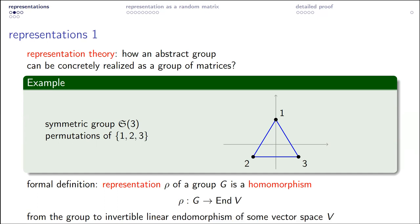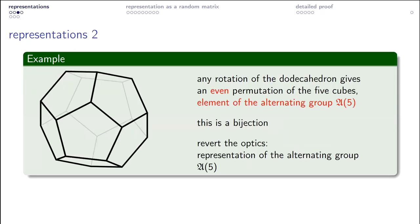This map which associates to permutations from S₃ two-by-two matrices is a representation — we have represented the symmetric group as certain isometries of the plane. Formally speaking, a representation is a homomorphism from your favorite group to matrices of some arbitrary size, or more precisely, a homomorphism to endomorphisms of some finite dimensional vector space.